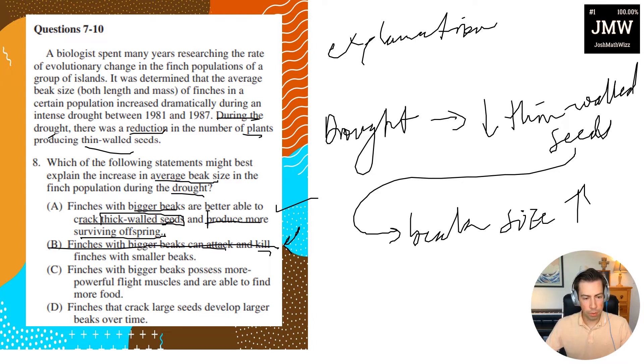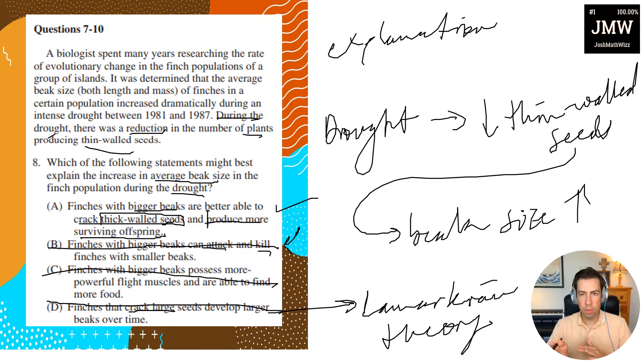C: Finches with bigger beaks possess more powerful flight muscles and are able to find more food. Well, again, if that's the case, why weren't their beaks always larger, right? And then D: Finches that crack large seeds develop larger beaks over time, and again this is basically a spin-off of the Lamarckian theory, which basically states that the more that an organ is used it leads to basically hypertrophy of that specific part or organ, and then that trait or that hypertrophy can basically be passed down to the offspring. And we know that, you know, with the exception of epigenetic cases, you can't pass down a trait that's developed through hypertrophy in your lifetime. Anyway, okay, so therefore A is going to be correct. All right, let's go to question 9.